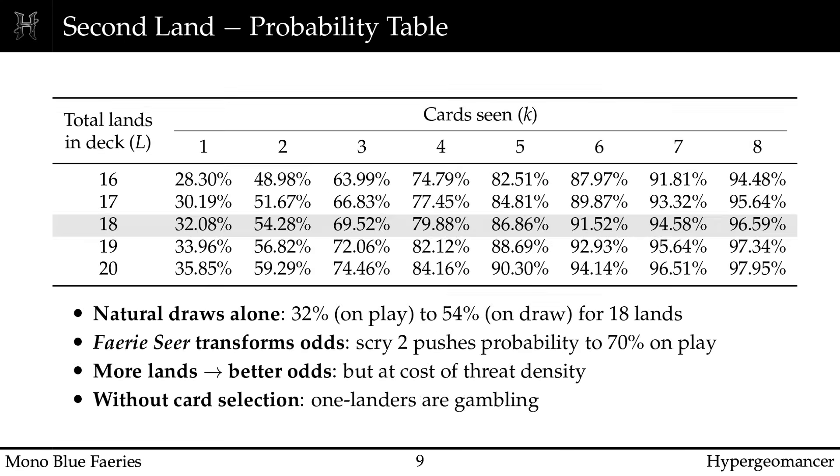For an 18 land deck, the raw numbers are sobering. On the play, with just your turn 1 draw, you have a 32% chance of finding your second land. By turn 2, that becomes 54%, basically a coin flip. Without card selection, 1 landers really are gambling.